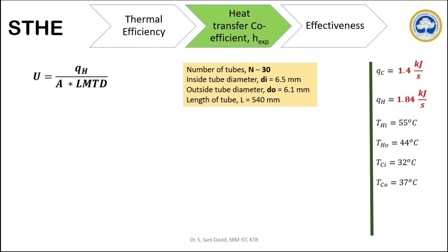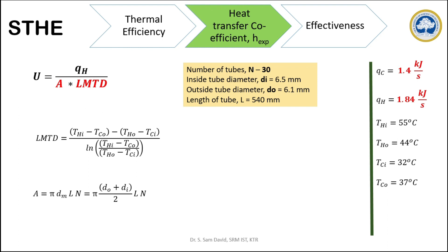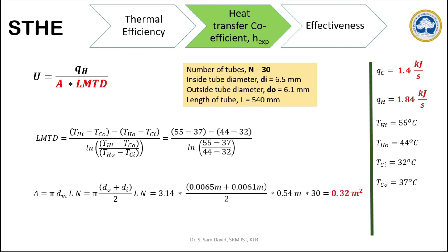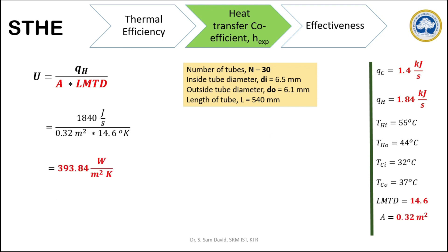Now we move on to the next objective: heat transfer coefficient calculation. To calculate the overall heat transfer coefficient, I have rearranged this equation. The specification of the heat exchanger is given in the yellow box. As we already have Q_H, now we have to calculate the area and LMTD value. The formula for calculating the LMTD is given here. To find the surface area of the heat exchanger, we find the surface area of one pipe and multiply with the number of tubes — in this case, 30 tubes. The mean diameter is calculated from the average of D0 and Di. Substituting these A and LMTD values, the overall heat transfer coefficient comes to be 393.84 Watt per meter square Kelvin.